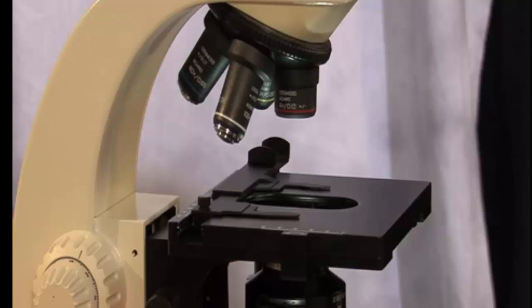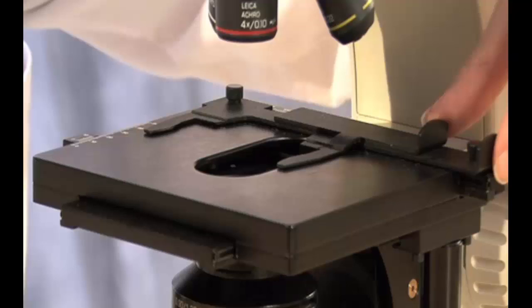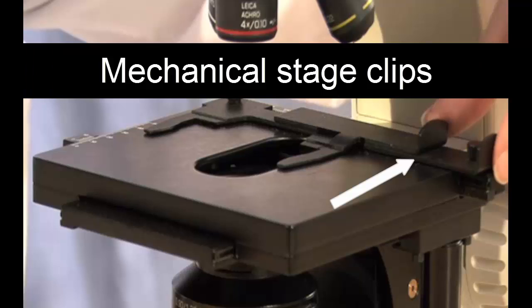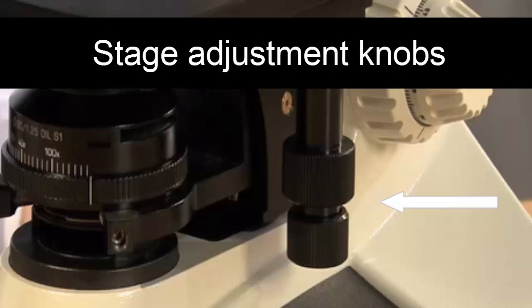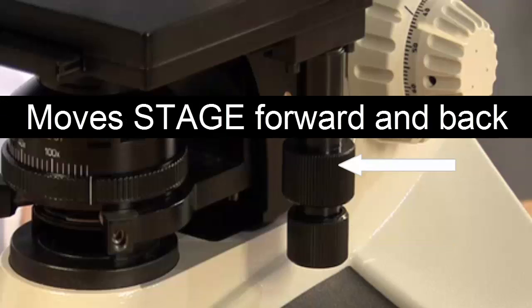Continuing down the microscope, we see the illumination system. Here, there is a stage which will give us a place to put our slide. There are also mechanical stage clips here on top and stage adjustment knobs just beneath the stage. The bottom stage adjustment knob moves the clips from side to side, while the top stage adjustment knob moves the stage forward and backward.